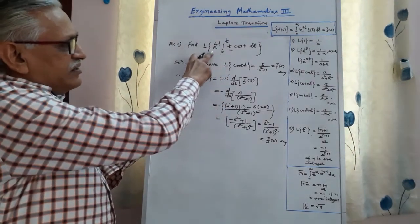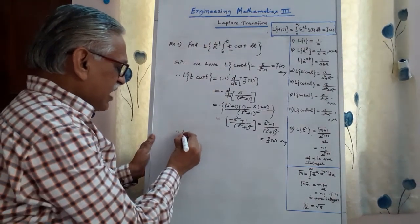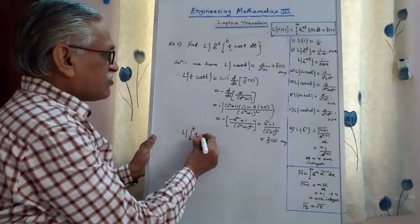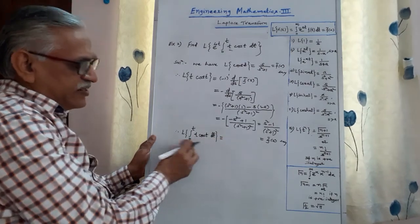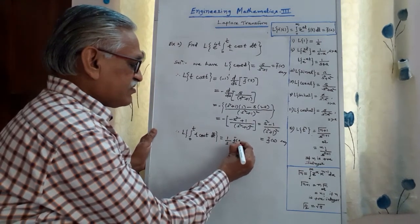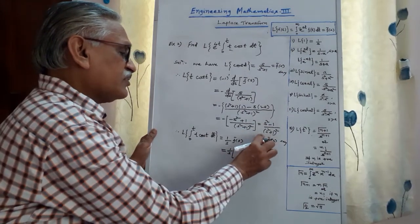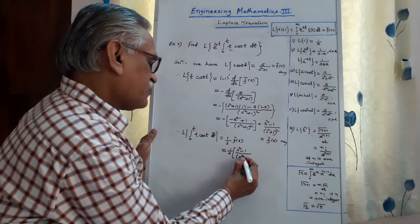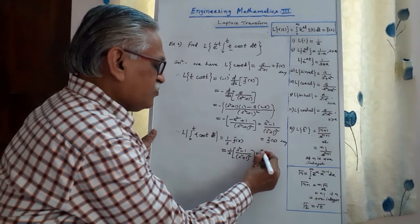Second step is completed. Then the third step: find the Laplace transform of the integral from 0 to t of t·cos(t) dt. Applying the Laplace of integral theorem, its value is (1/s)·f̄(s). Therefore it is (1/s) times (s² − 1)/(s² + 1)². We call this the new f̄(s).